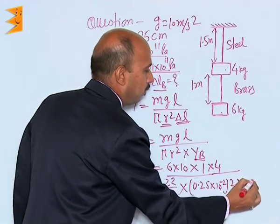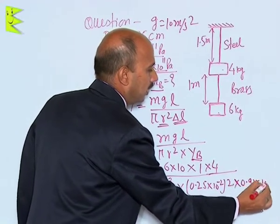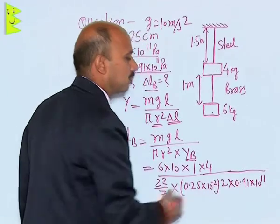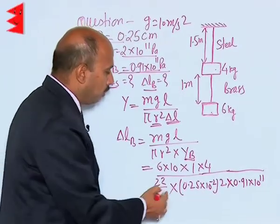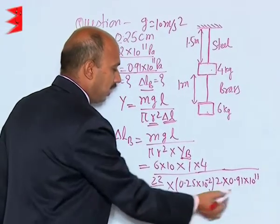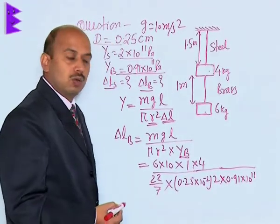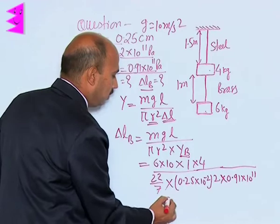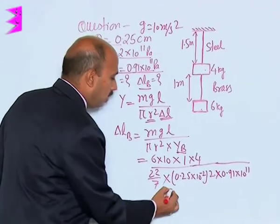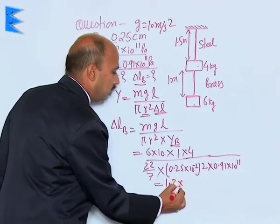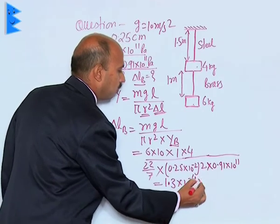Young's modulus is 0.9×10^11. Put these values and calculate. When you calculate all these values, you get approximately 1.3×10^-4 meters.